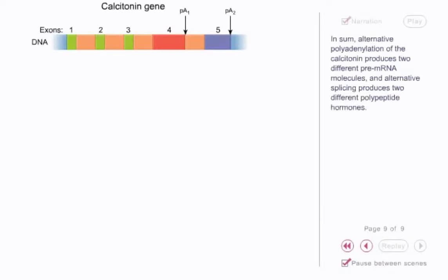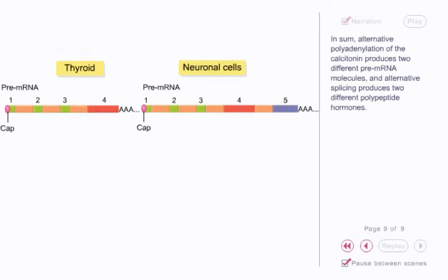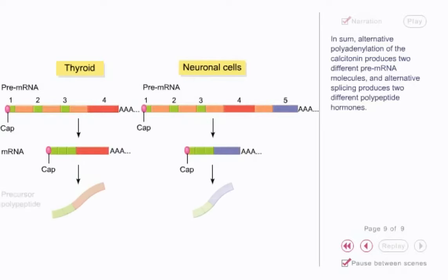In sum, alternative polyadenylation of the calcitonin gene produces two different pre-mRNA molecules, and alternative splicing produces two different polypeptide hormones.